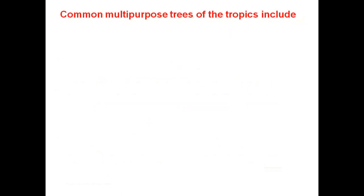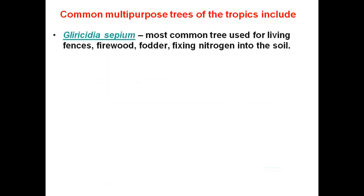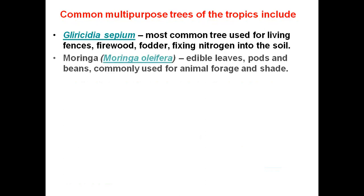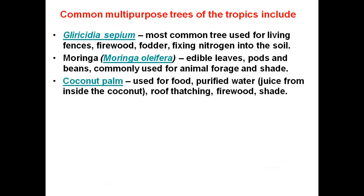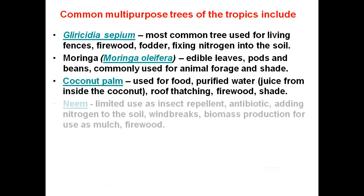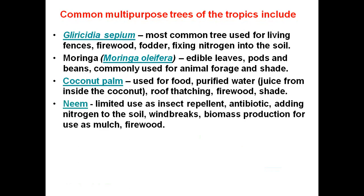Common multipurpose trees of the tropics include Gliricidia sepium, which is the most common tree used for living fences, firewood, and fixing nitrogen into the soil. Moringa oleifera has edible leaves, pods, and beans, commonly used for animal forage and shade. Coconut palm is used for food, purified water, roof thatching, firewood, and shade. Neem has limited use as an insect repellent, can be used as an antibiotic, adds nitrogen to the soil, and is used as a windbreak and for biomass production as mulch and firewood.